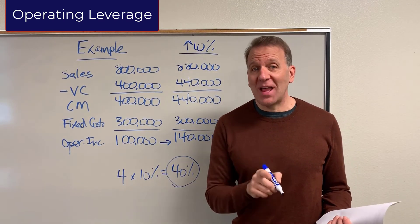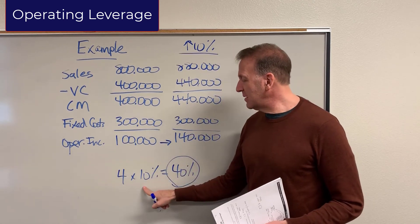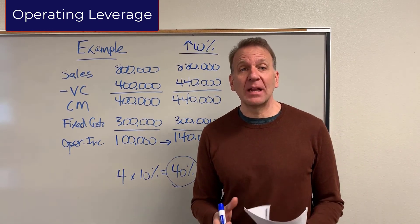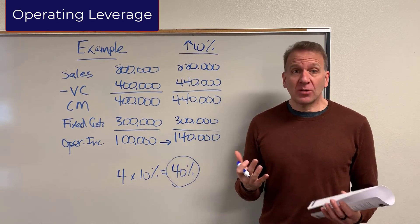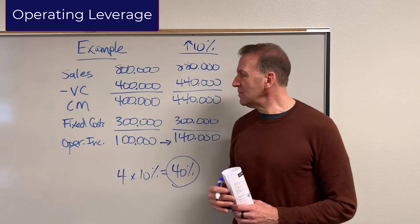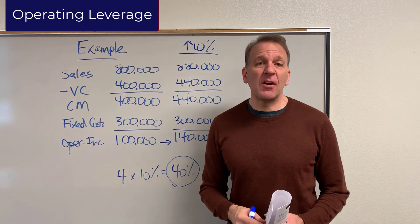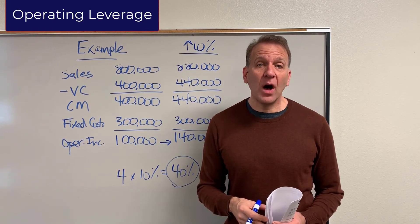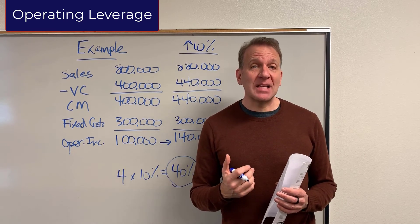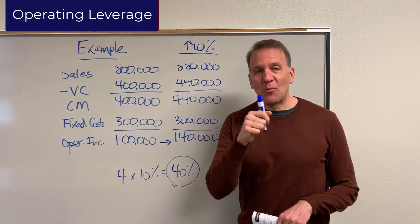But think about what happens if sales go down. If sales were to decrease by 5%, then four times 5% would give us a 20% decrease in operating income. So you've got to be careful with operating leverage — it's great for high operating leverage companies if sales are going up, but if sales go down, that's not so good. If a company has very little fixed costs, we'd say it's a low operating leverage company, and their factor is going to be a very small number, maybe one or a little bit over one.